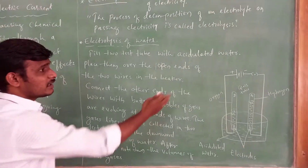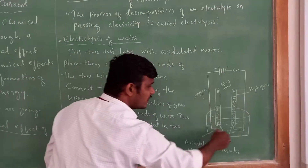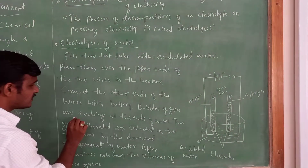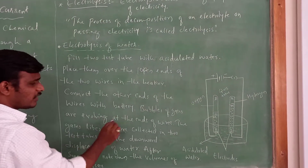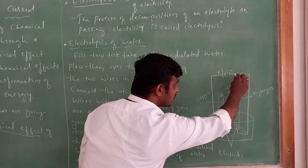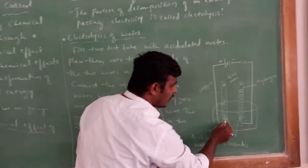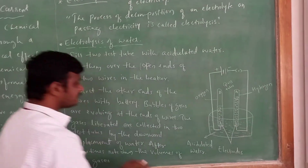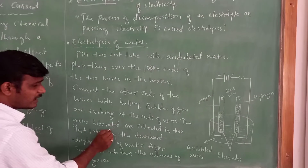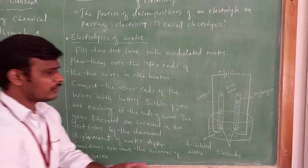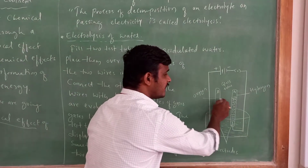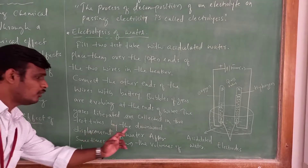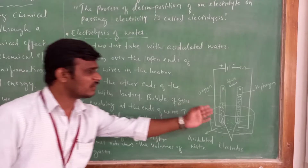After connecting the battery, the flow of current takes place. When current flows, bubbles of gases evolve at the ends of the wire — at both electrodes. The gases liberated are collected in the two test tubes — test tube A and test tube B — by the action of downward displacement of water.